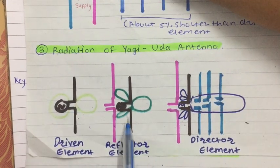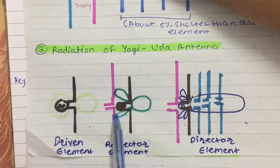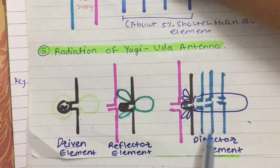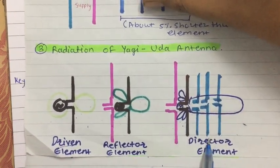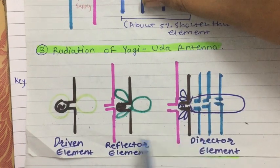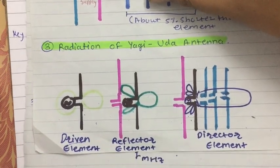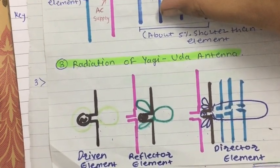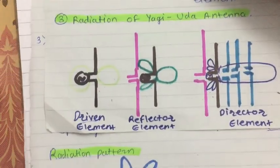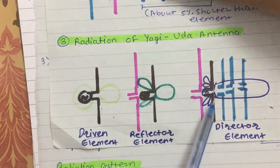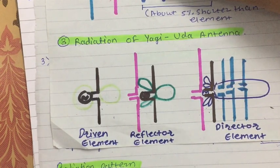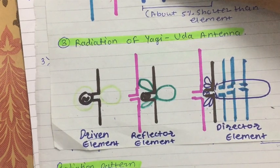With the reflector element added, power radiation in the right side direction has increased, and left side power is reduced. Now when we add director elements, the beam in the front direction gets sharper — the beam width of the major lobe decreases as the number of director elements increases. The minor lobe magnitude decreases and the beam gets narrower. This is how radiation changes as different elements are introduced.